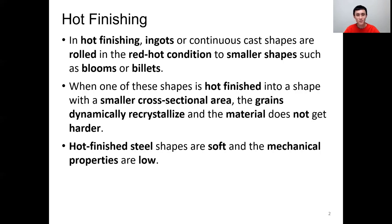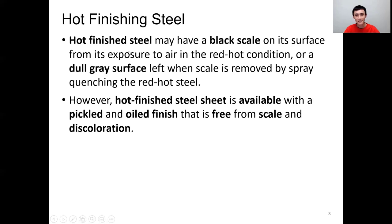During the hot finishing process, because the temperature is above the austenitic temperature, the grain size will dynamically recrystallize and the strength or hardness of the material will not change. As a result, hot finished steel is soft and the mechanical properties — meaning strength and hardness — remain low. Since hot finishing takes place in the bright hot condition, there will be black scales on the surface of the hot finished material.